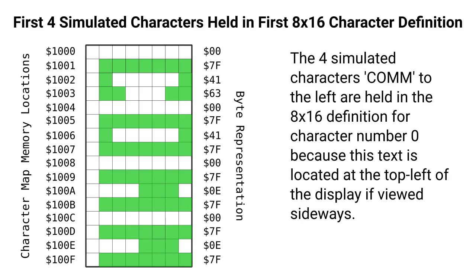Therefore, in those 16 bits down, if we're going to put our characters sideways, we can get four 4-bit characters in each character definition. And if we look at this example here, we can see that we've got the letters C-O-M-M for Commodore — that's how it would look in the character map.